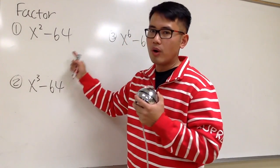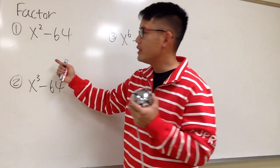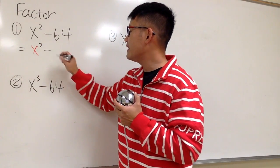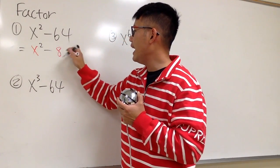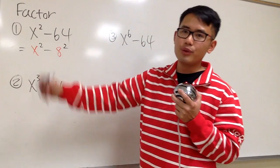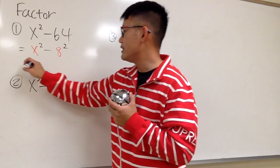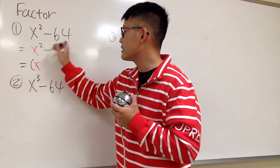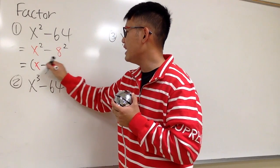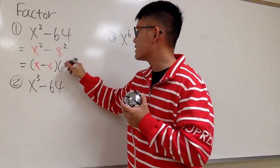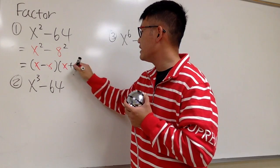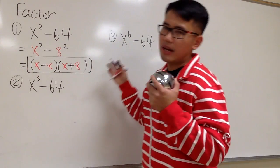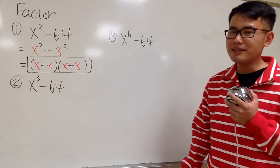x squared minus 64 — we are going to do this by looking at it as x squared minus 8 squared, the difference of two squares. And of course, the answer is going to be x minus 8 times x plus 8. I told you this is the easiest one.